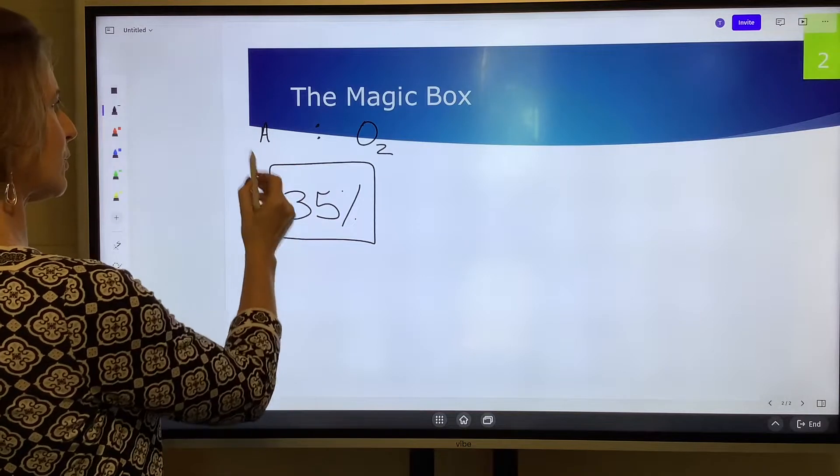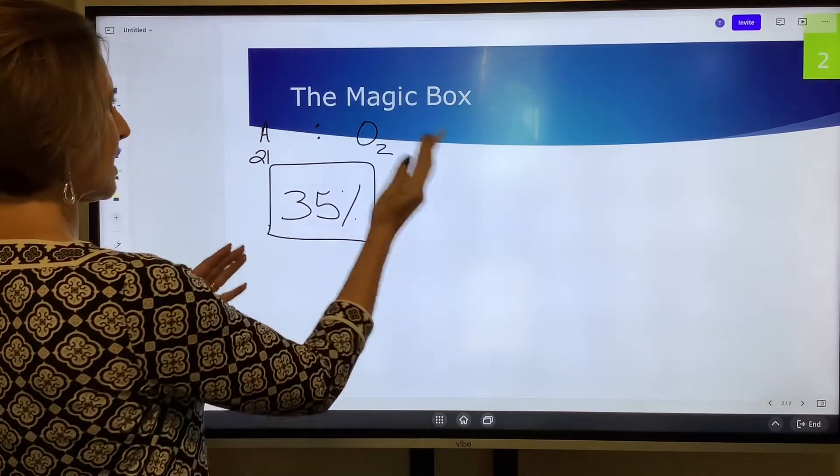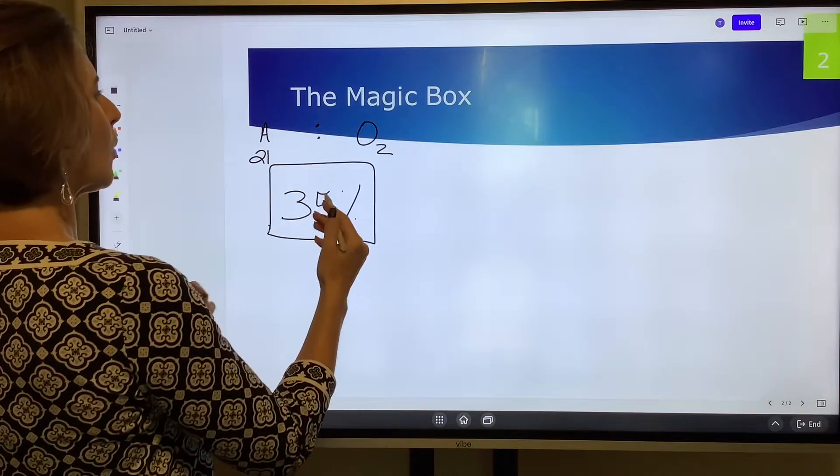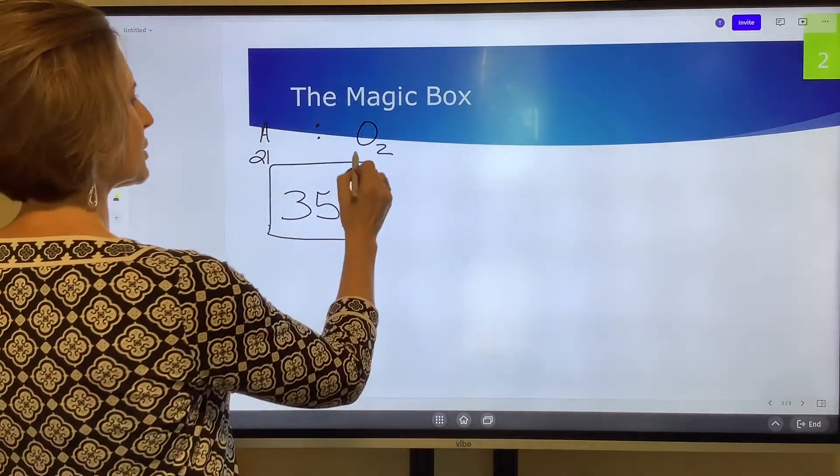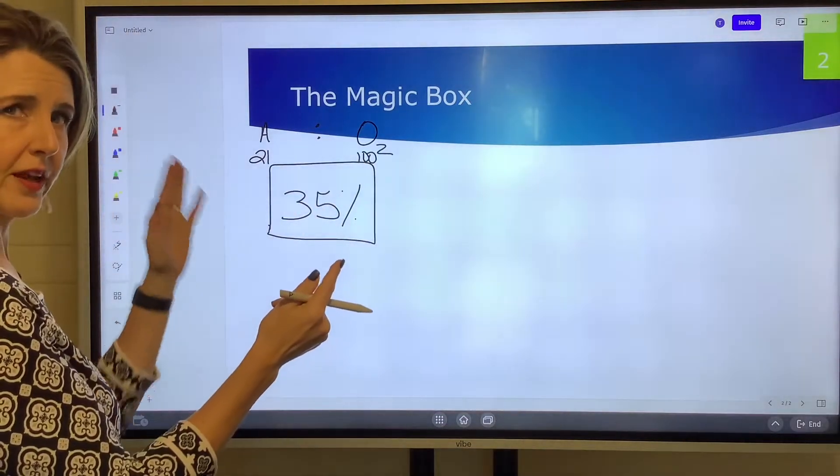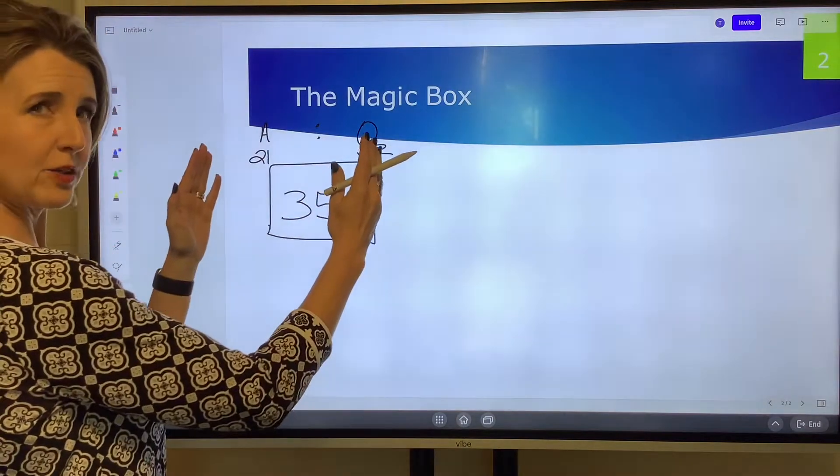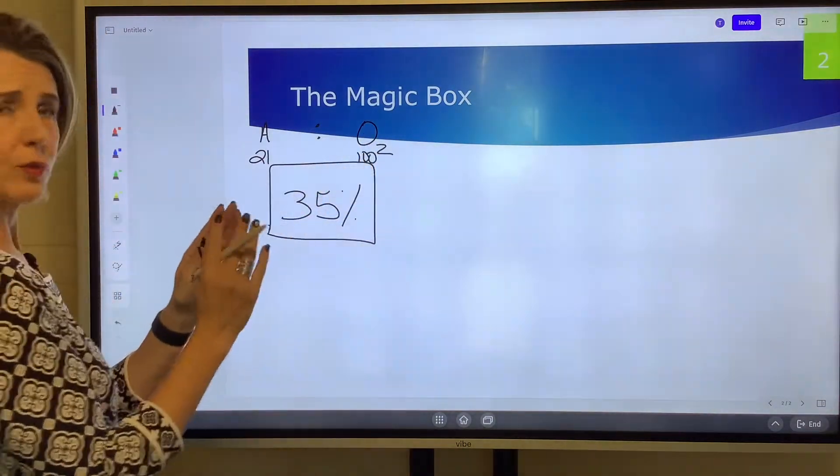With this box, on the top left hand corner we have to ask ourselves what's the FiO2 of room air, and it's 21 percent. On the top right hand corner, what is the FiO2 of pure oxygen? It's 100 percent. So it's important to set this up: on the left side is the FiO2 of air, on the right side is the FiO2 of oxygen.